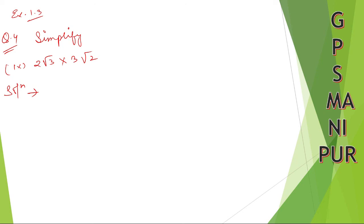What you are going to do here — look, this 2 root 3 into 3 root 2 — multiply whole number into whole number and root number into root number. So 2 into 3 is 6, root over 3 into 2 is root 6. It is 6 root 6. Simple, that is your answer.